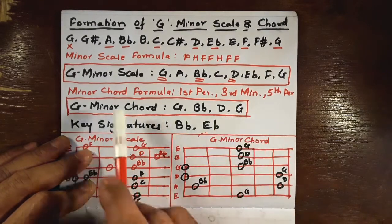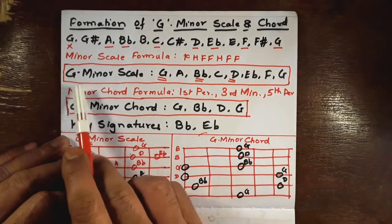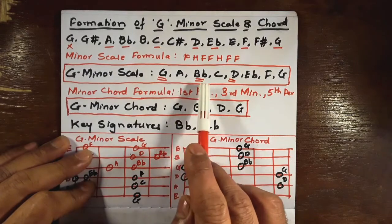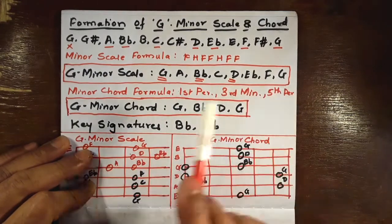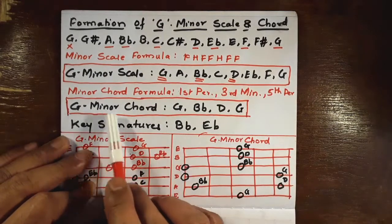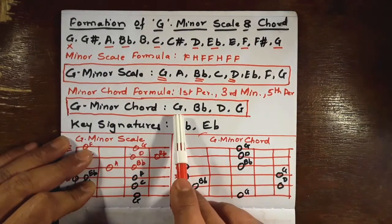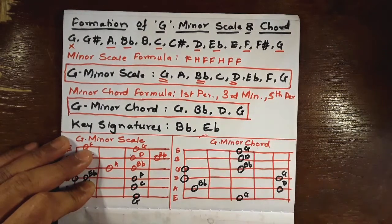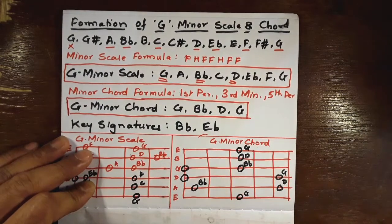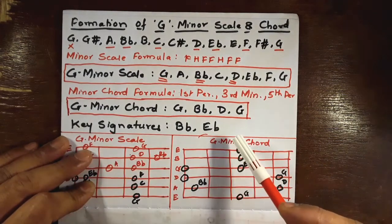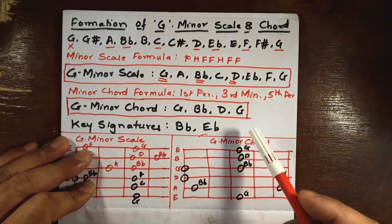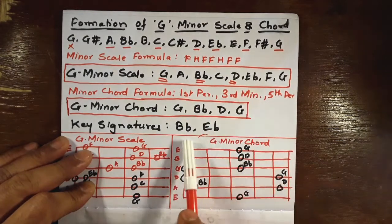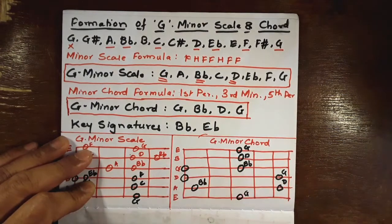So the G minor chord comes out to be G, B flat, and D — and G. The key signatures of the G minor scale are the two flats: B flat and E flat.